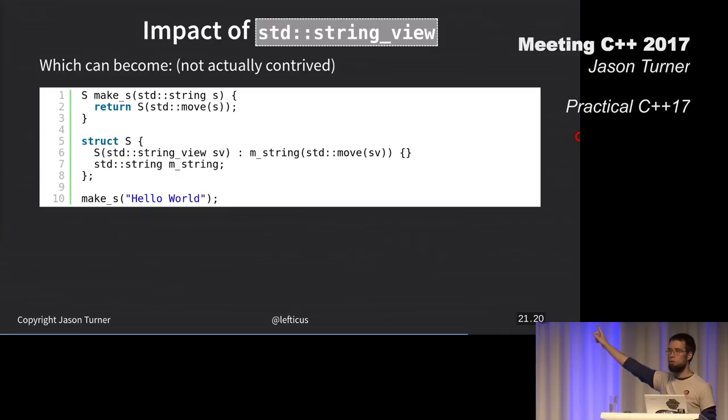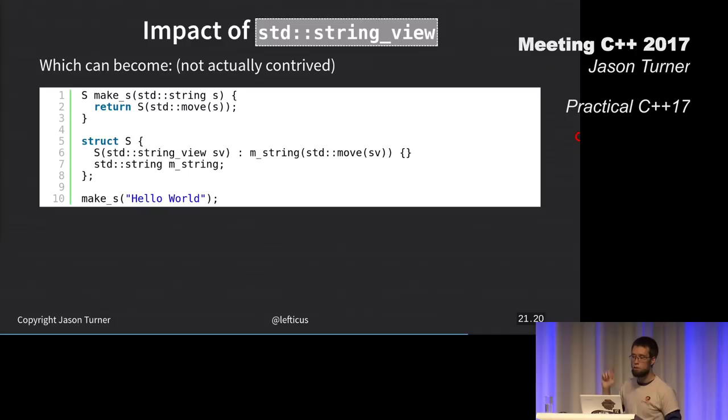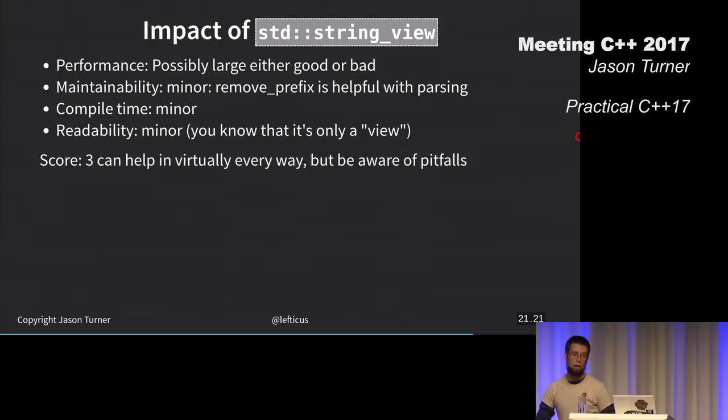I have in parentheses, not actually contrived. This is true. This happened during the refactoring of ChaiScript's parser to using string view. I realized that I had multiple layers of string to string view to string to string view conversions. These implicit conversions are something that we should be aware of. The performance can be large in a good or bad way, depending on what you do. I did not mention, but I should do a shout out to remove prefix that can actually be really helpful. I think that the readability has actually helped here. I gave this a score of three.